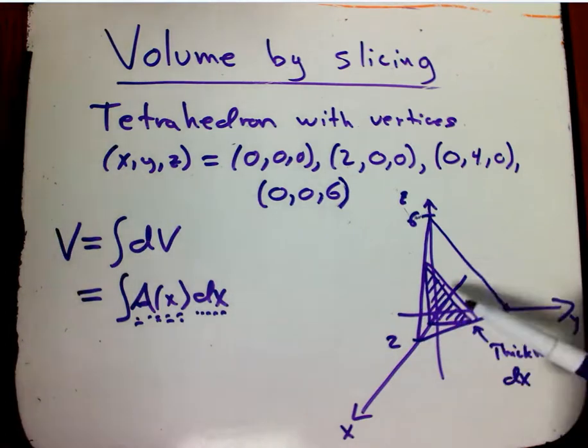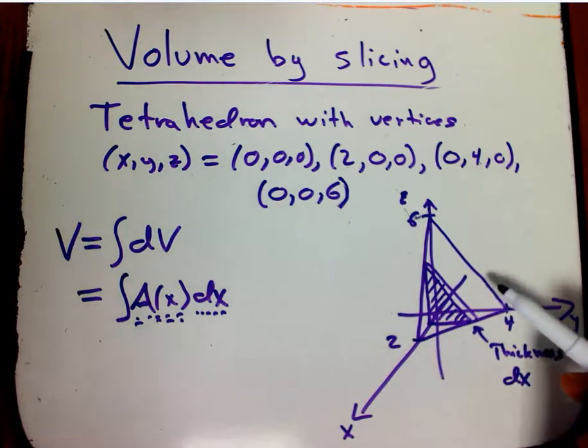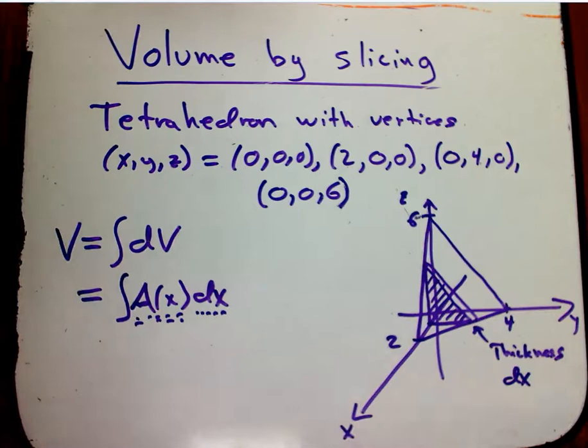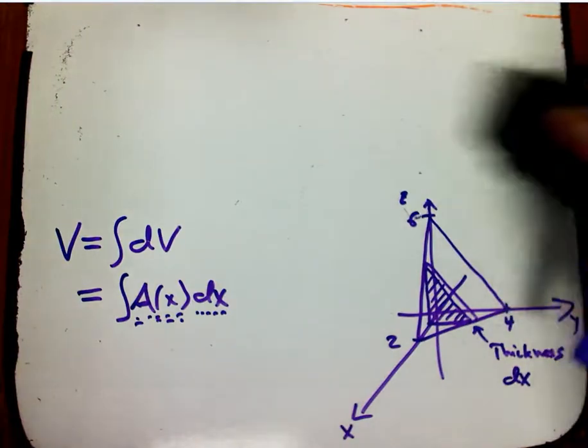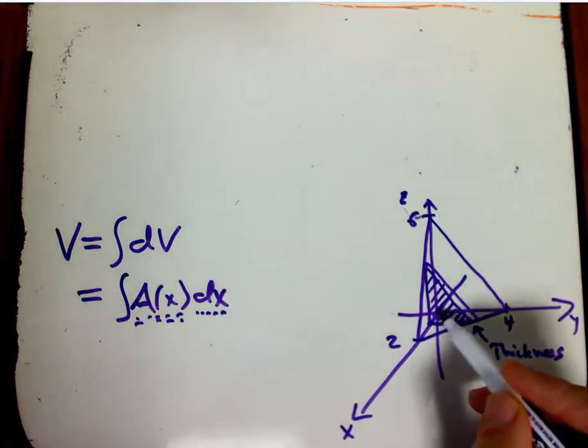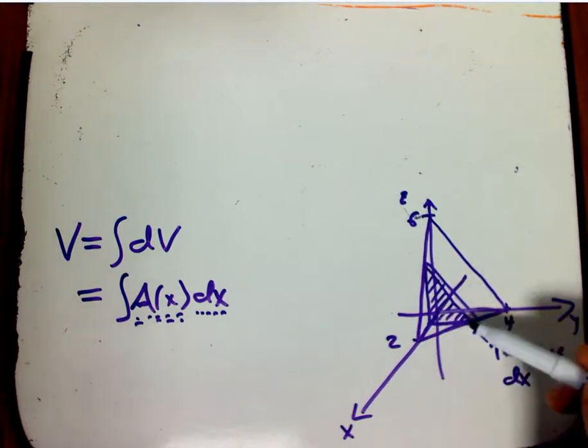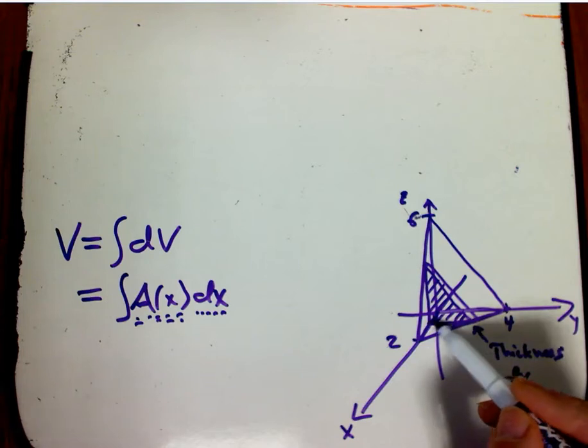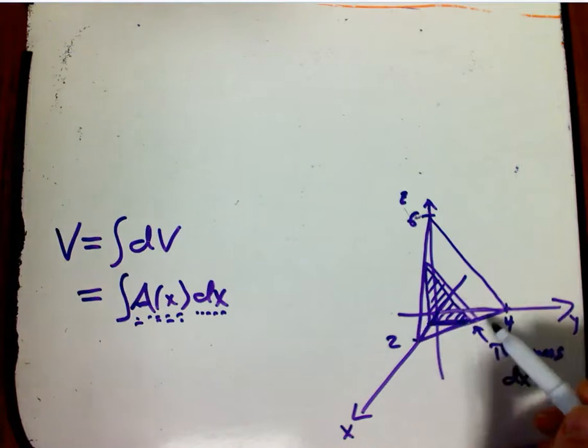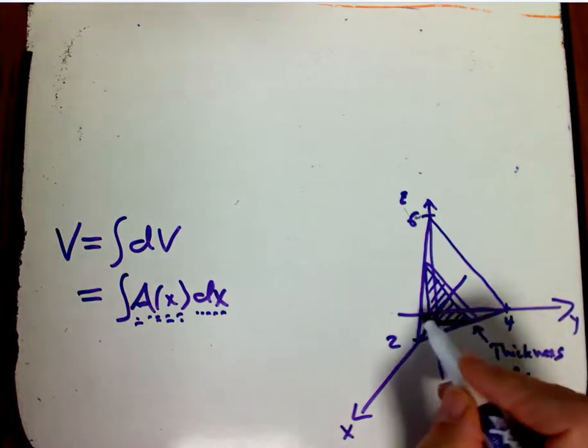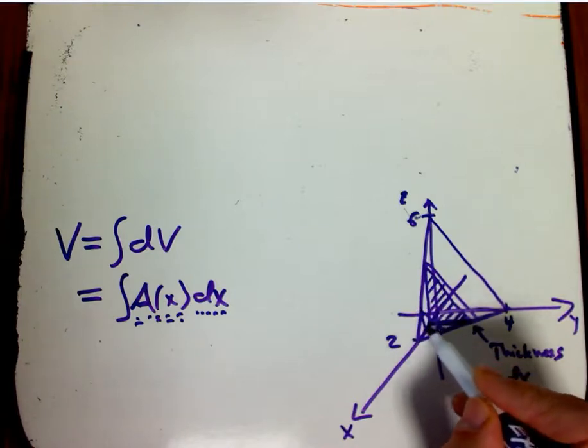Now that can be a little tricky sometimes. Often you're going to need some other two-dimensional pictures to help you with that. Here's one way to do that in this case. The base of this thing is this triangle down here. Every one of these slices is a right triangle that is based on a segment in this two-dimensional triangle in the xy plane.